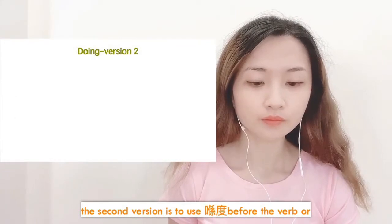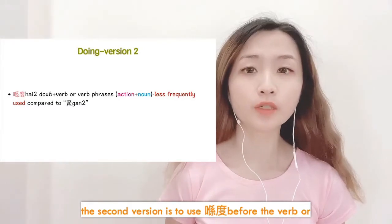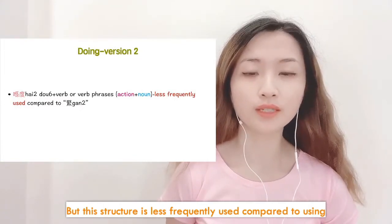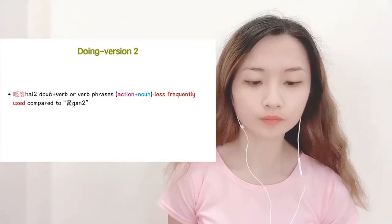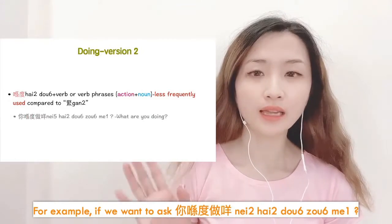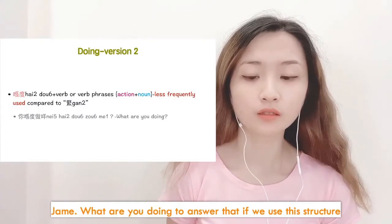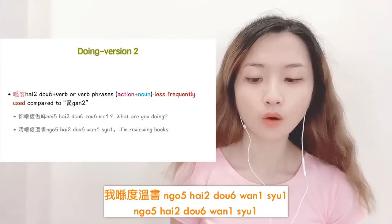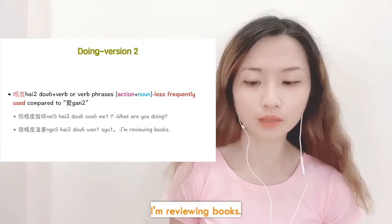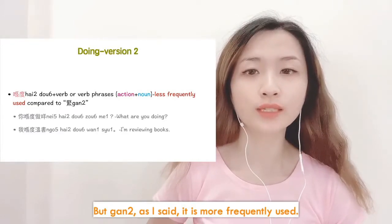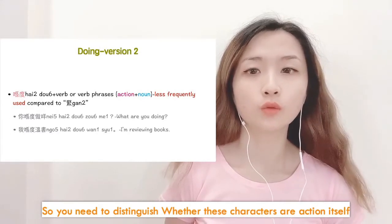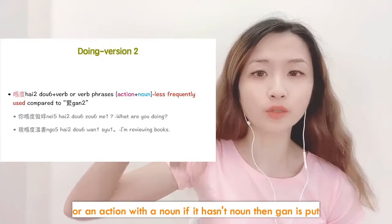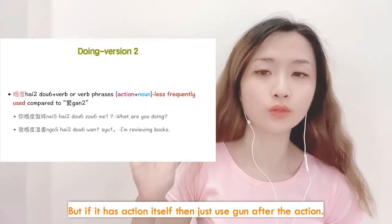The second version is to use 喺道 before the verb or verb phrases, but this structure is less frequently used compared to using 緊. For example, if we want to ask 你喺道做咩? — 'What are you doing?' — we can answer 我喺道溫書, meaning 'I am reviewing books.' But 緊 is more frequently used. You need to distinguish whether the character is an action itself or an action with a noun. If it has a noun, 緊 is put in between; if it is an action itself, just use 緊 directly after the verb.